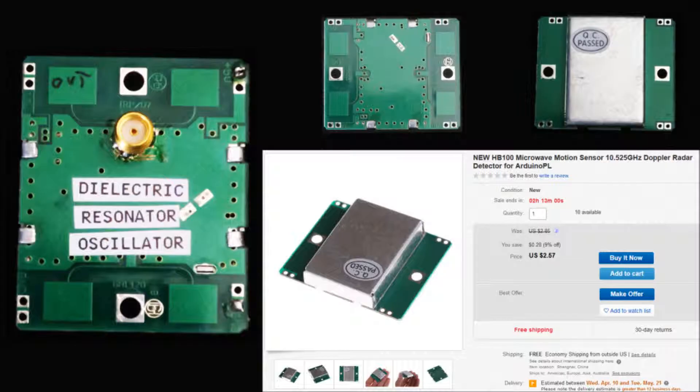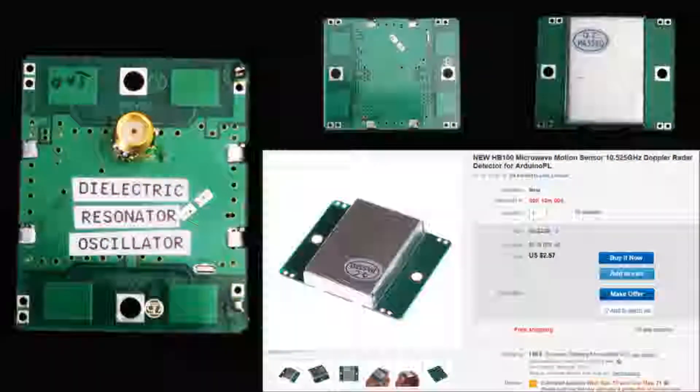A relatively new addition are dielectric resonator oscillators that are the heart of these microwave Doppler motion detectors. These are going for under $3 on eBay. They require 5 volts DC and generate a few milliwatts of 10.5 gigahertz, somewhat lower power than the Gunn oscillators but still usable. You'll need to do some slight mods with an X-acto knife so you can add an SMA connector.